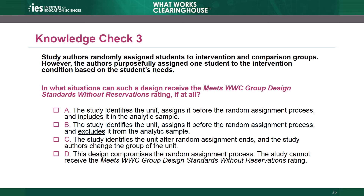Or Choice D: this design compromises the random assignment process so the study cannot receive the Meets WWC group design standards without reservations rating. B is the correct answer. Purposefully assigning a student to one condition outside of random assignment does not compromise the random assignment as long as the study identifies the student before random assignment and does not include the student in the analytic sample. Choice A is incorrect because including a unit not randomly assigned in the analytic sample compromises the integrity of the random assignment process. Choice C is incorrect because changing the condition of units after random assignment compromises random assignment. Choice D is also incorrect because these units do not compromise random assignment when the study identifies them before random assignment and does not include them in the analytic sample.